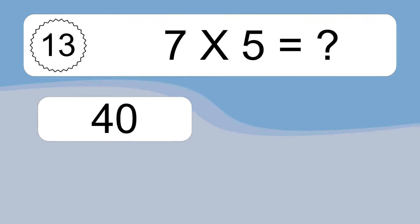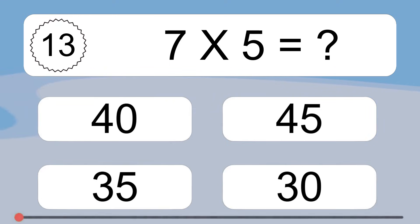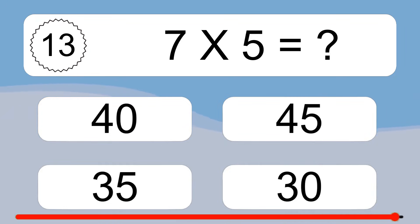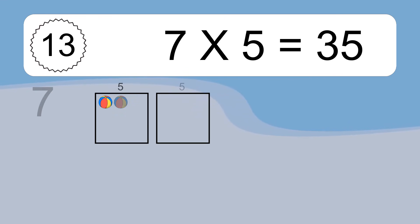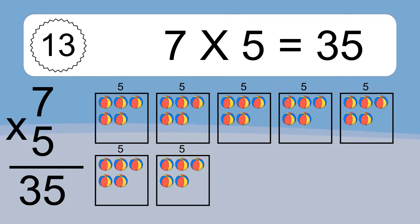7 times 5 equals what? 7 times 5 equals 35. We have 7 boxes, and each box has 5 colorful balls inside. If you count all the balls in all the boxes together, you will have 7 times 5 balls. This equals 35 balls.